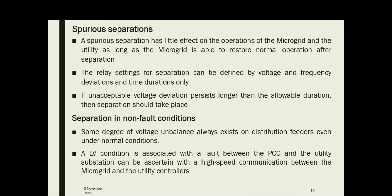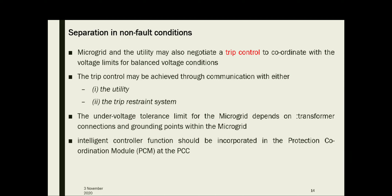Trip control may be achieved through communication with either the utility or a trip-restraint system. Some degree of voltage unbalance always exists on distribution feeders even under normal conditions. The voltage tolerance limit for the microgrid depends upon factors like transformer connections and grounding points within the microgrid. Therefore, an intelligent controller function should be incorporated in the protection coordination module at PCC to make the appropriate decision of whether to separate or not, based upon voltage unbalance.